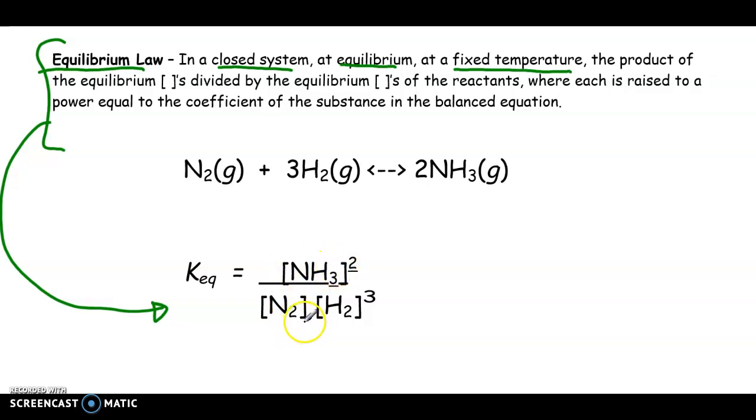Here's another example showing you this setup. Remember, these are all gases, so they will all be in this expression. We have products, which is ammonia to the exponent two, over reactants, which is nitrogen to the exponent one, and then hydrogen to the three.